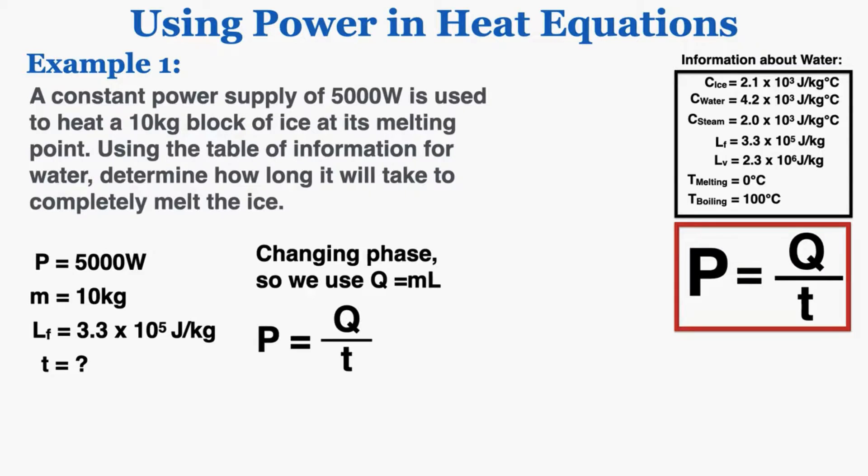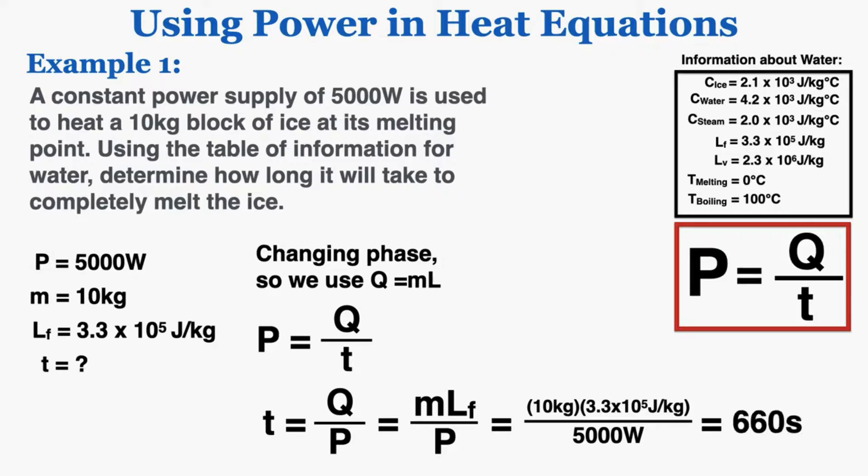So I know that power is equal to heat divided by time, so that means that time is equal to heat divided by power, and I can rewrite that equation replacing Q with M times L. So now I have what I'm looking for, T, and everything I have, M and L and P, so I can just plug those into my equation and find that it would take 660 seconds for a power supply of 5,000 watts to completely melt 10 kilograms of ice at its melting point into water.